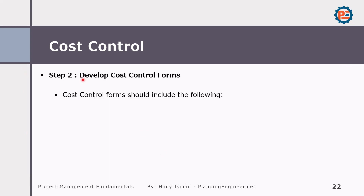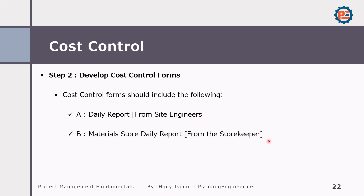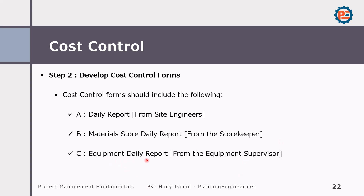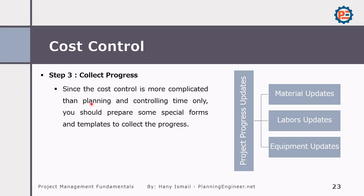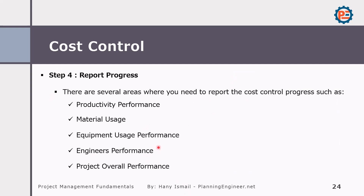Developing cost control forms should fit the baseline we created. We need daily reports from site engineers, a material store daily report to track material usage, and an equipment daily report. Collecting progress gives us the opportunity to evaluate the actual work and compare it to our baseline. After collecting progress, we can create reports on productivity performance, material usage, and equipment usage.